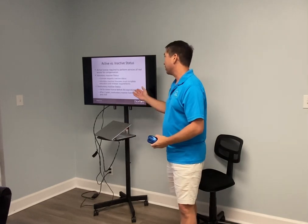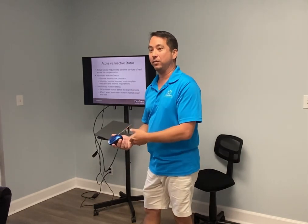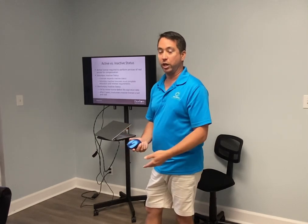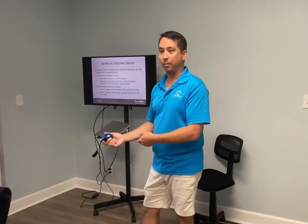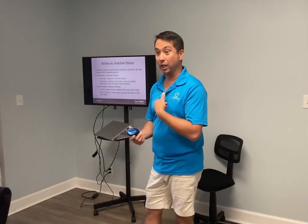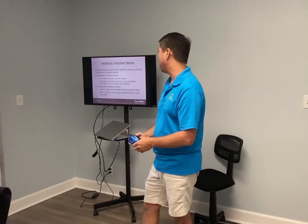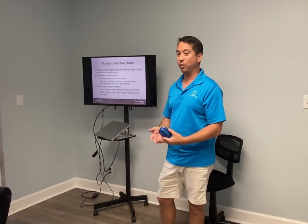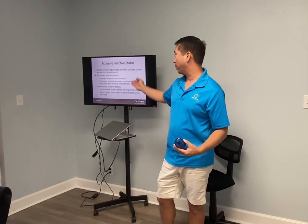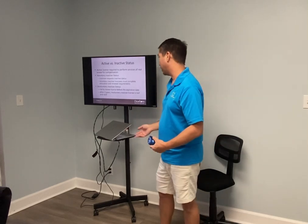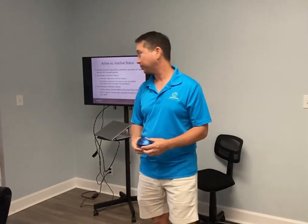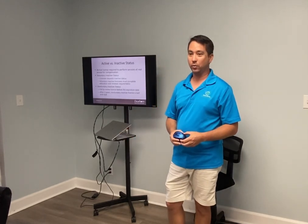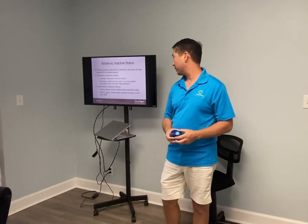Active license means you're active with a broker and can now practice real estate. Voluntarily inactive means you've chosen to be inactive — maybe you got a job in securities and they don't want you to have an active real estate license, but you want to keep it. You continue doing your education and renewals, and when you leave that job you go back and reactivate. You request this inactive status and must still complete your education.